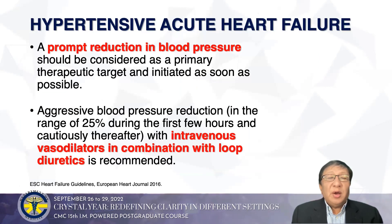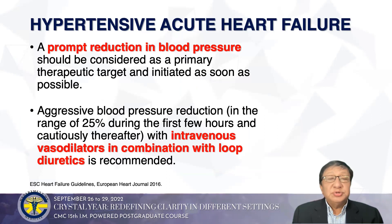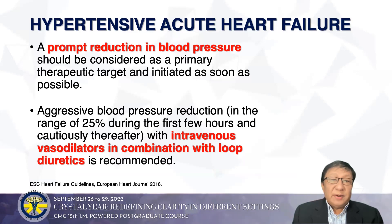In this scenario, we must have prompt reduction in blood pressure, considered a primary therapeutic target, initiated as soon as possible. This aggressive blood pressure reduction in the range of 25% should be done during the first few hours and cautiously thereafter. We have to use intravenous vasodilators in combination with loop diuretics.